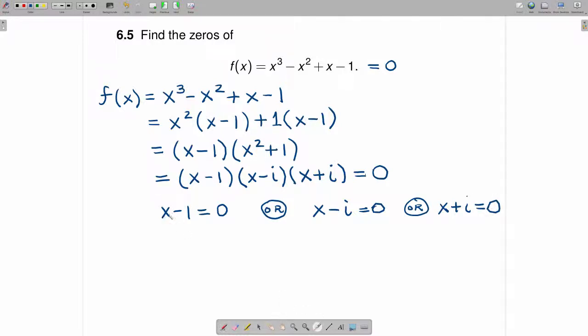So to solve these equations, in the case of the first equation, we add 1 to both sides. When we add 1 to the left-hand side, we get x. When we add 1 to the right-hand side, we get 1.